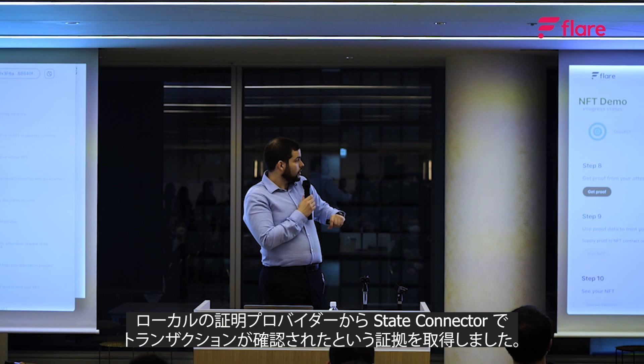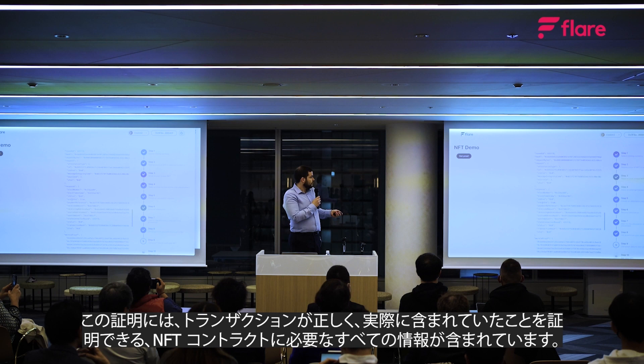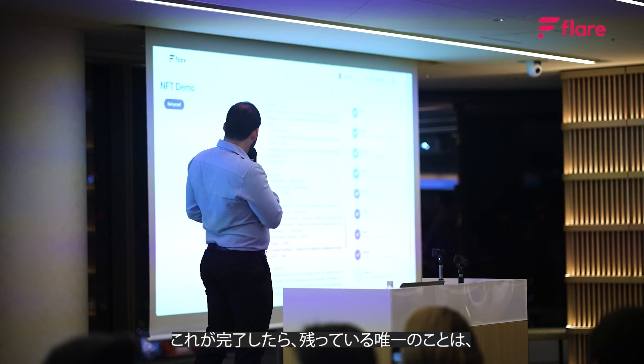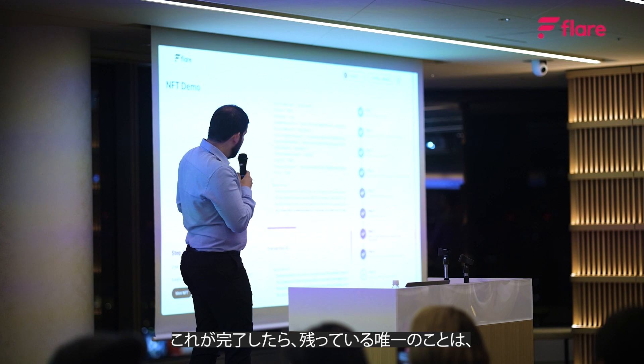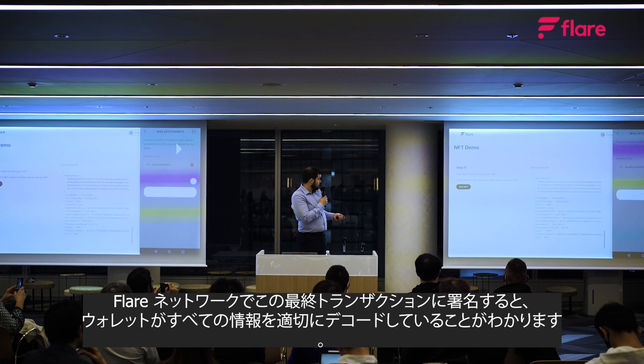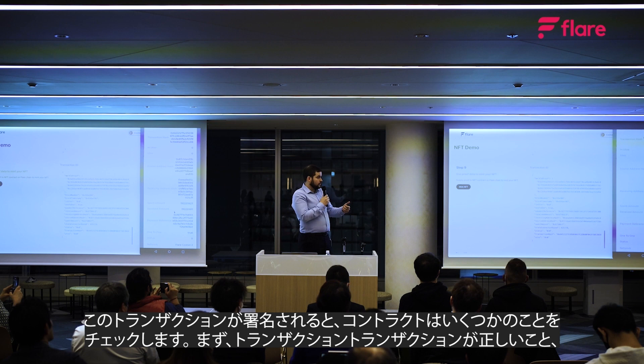This proof contains all necessary information for the NFT contract to verify that the transaction was correct and really included: block number, sender's and receiver's addresses, the received amount, and the payment reference we created at the beginning. We then mint our NFT by providing the NFT contract with the full proof, which gets forwarded to the State Connector. We sign this final transaction on the Flare network, and the wallet nicely decodes all the information.